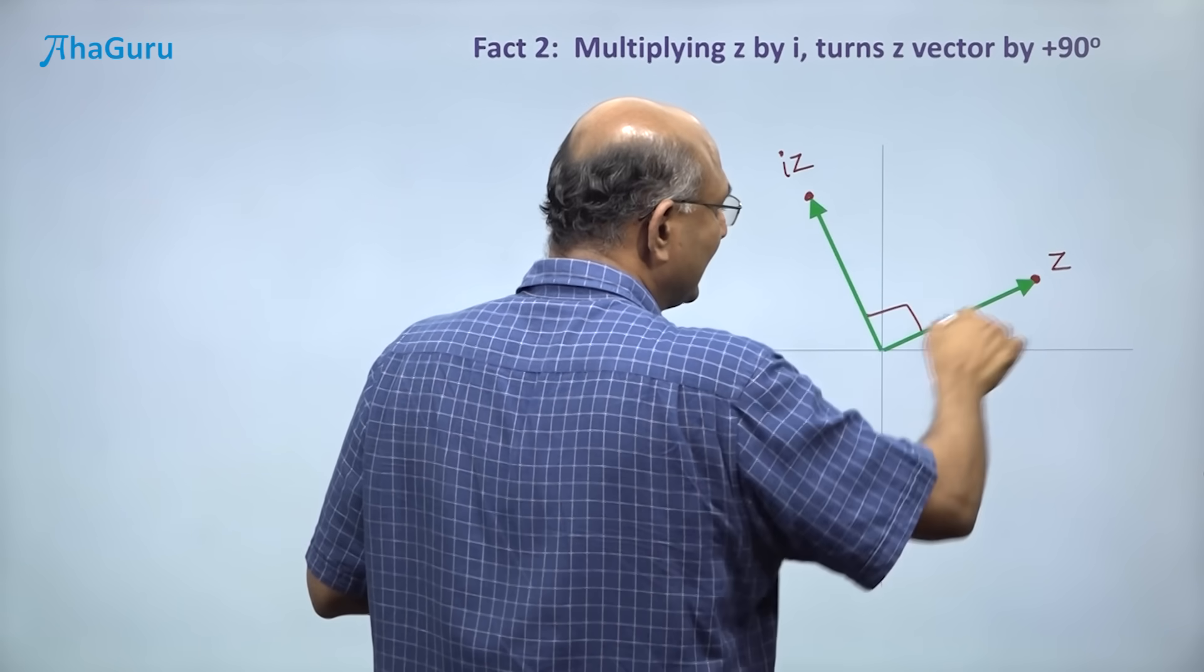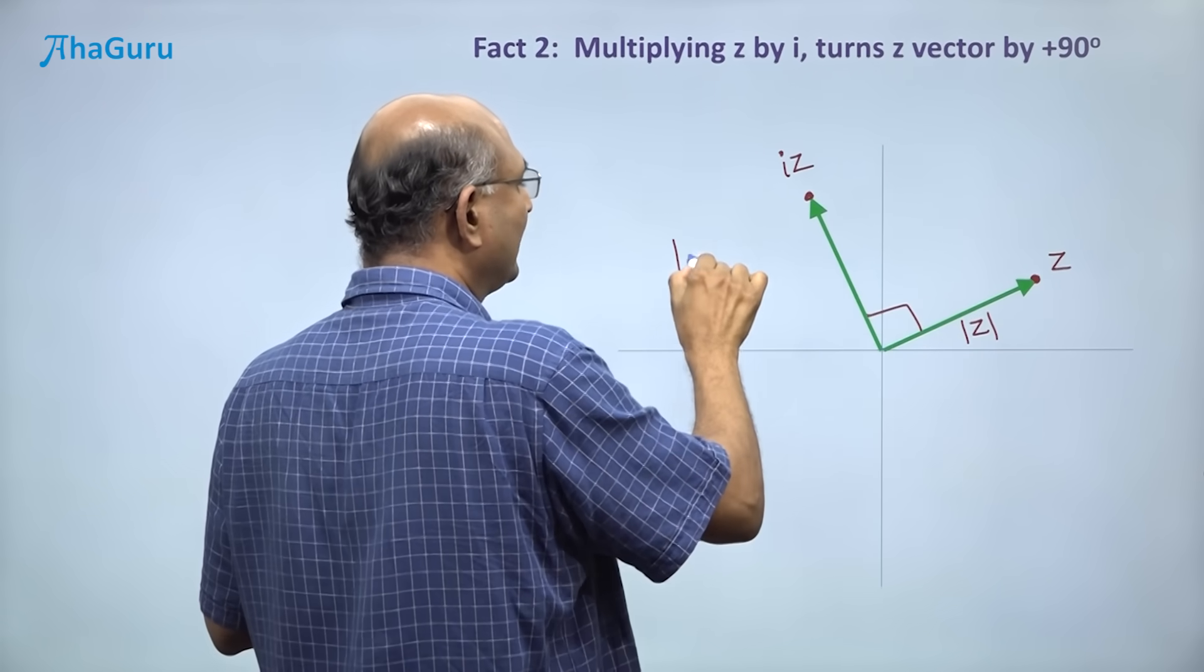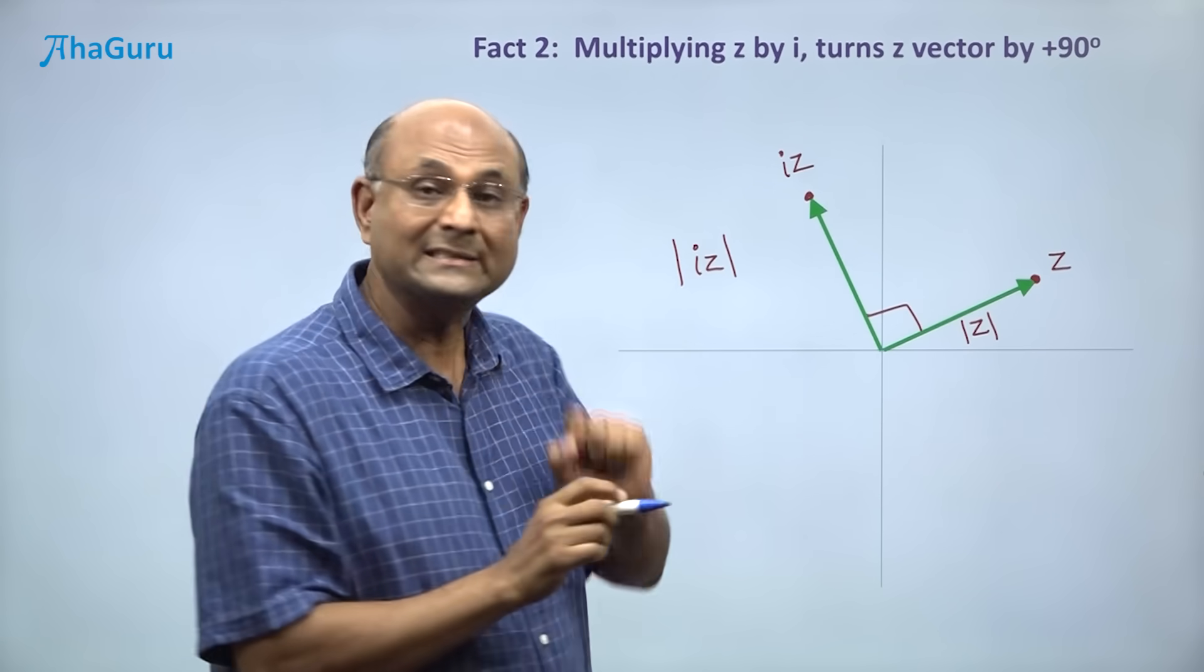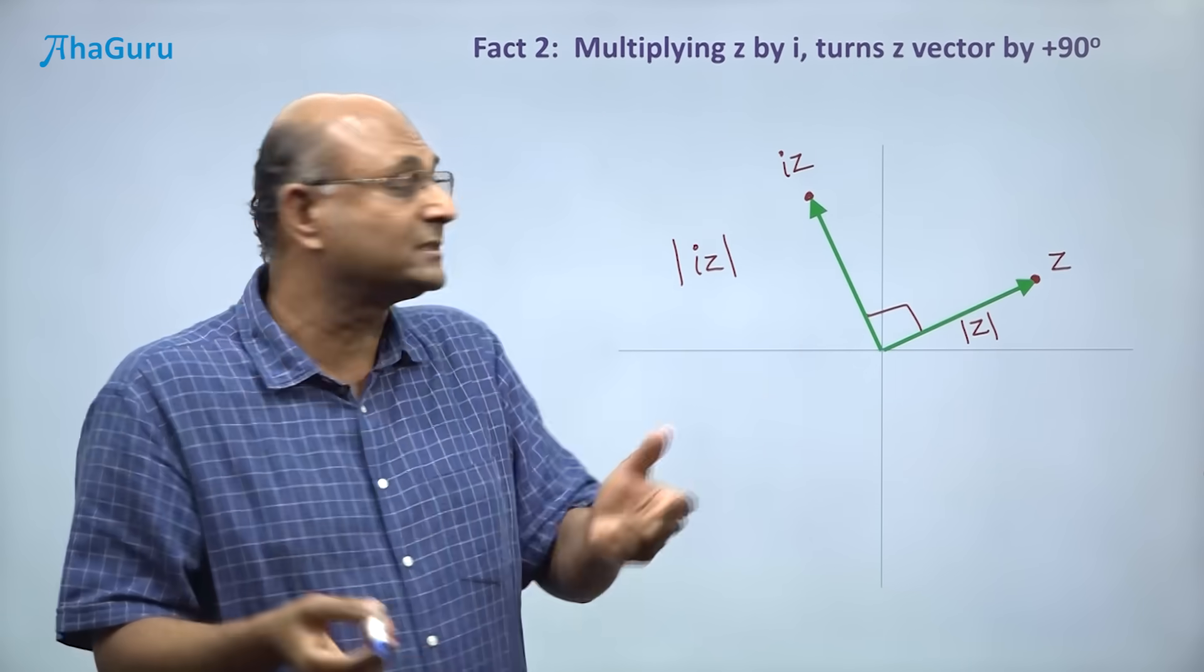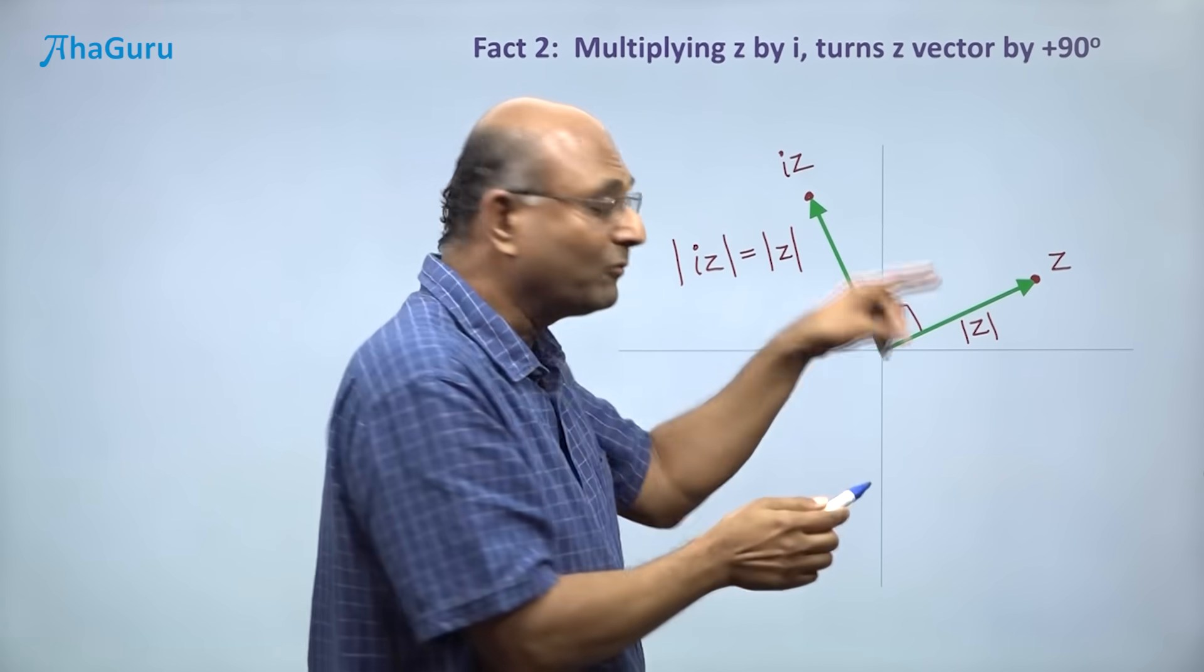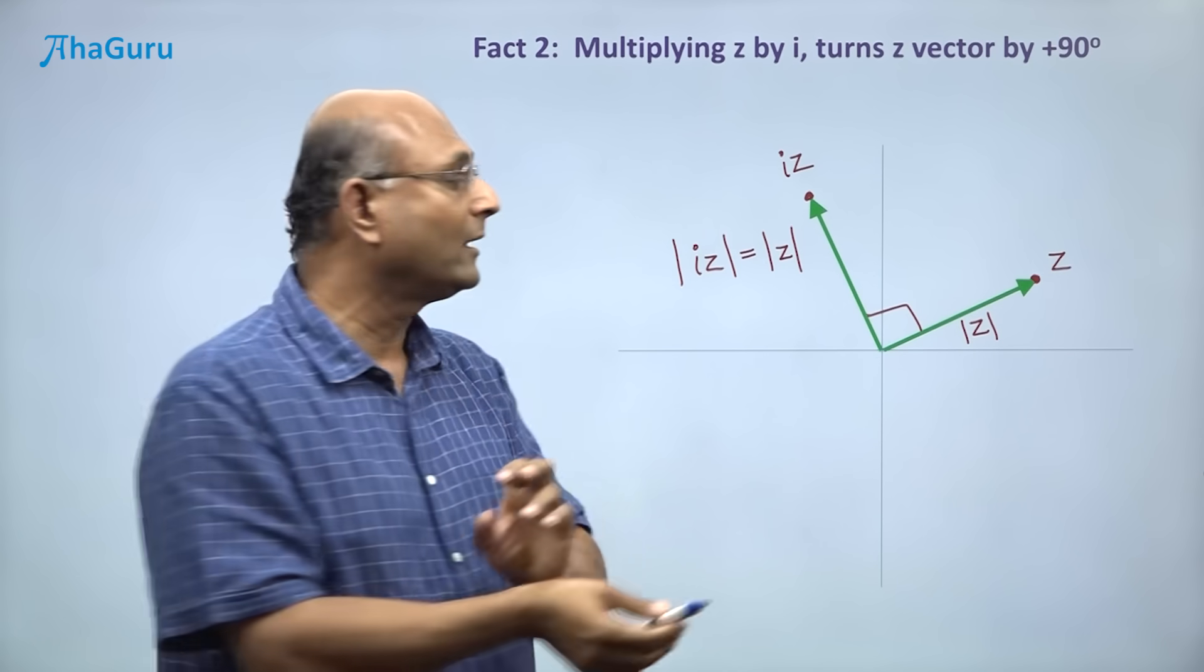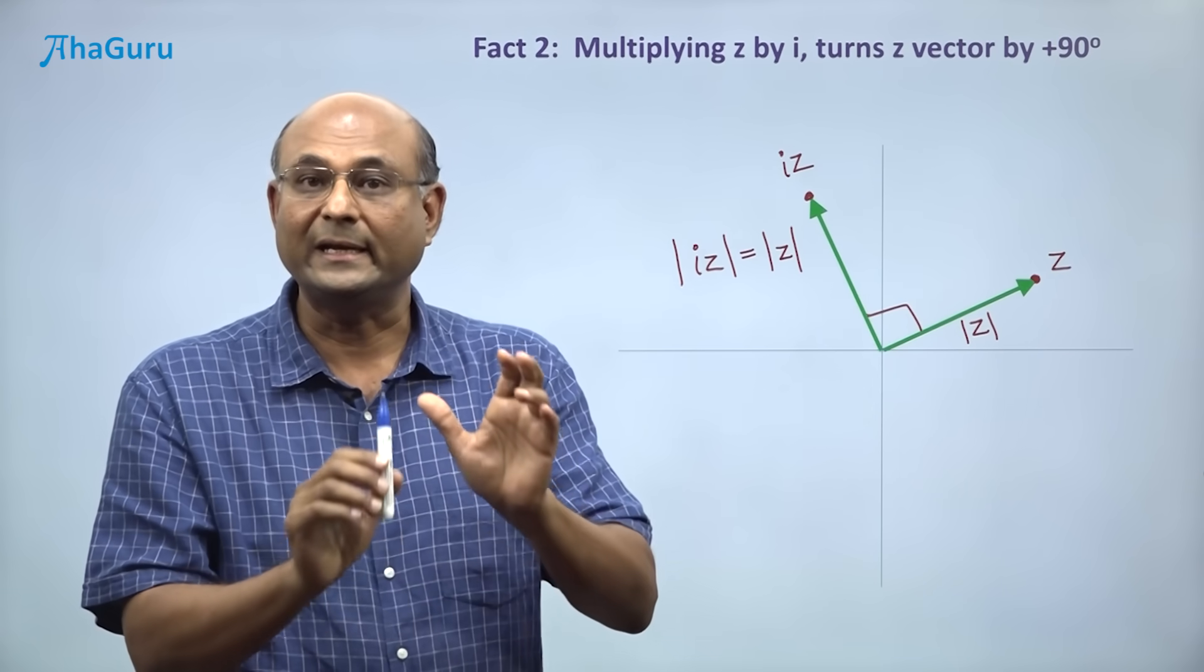Now you know that this is modulus z and this should be modulus of iz. This length should be modulus of iz. But how did I get iz from z? All I did was to turn this around, so the length would not have changed. So what is modulus of iz? It must be equal to modulus of z. So we now know that whenever you multiply any complex number by i, all you are doing is to turn that arrow by 90 degrees.